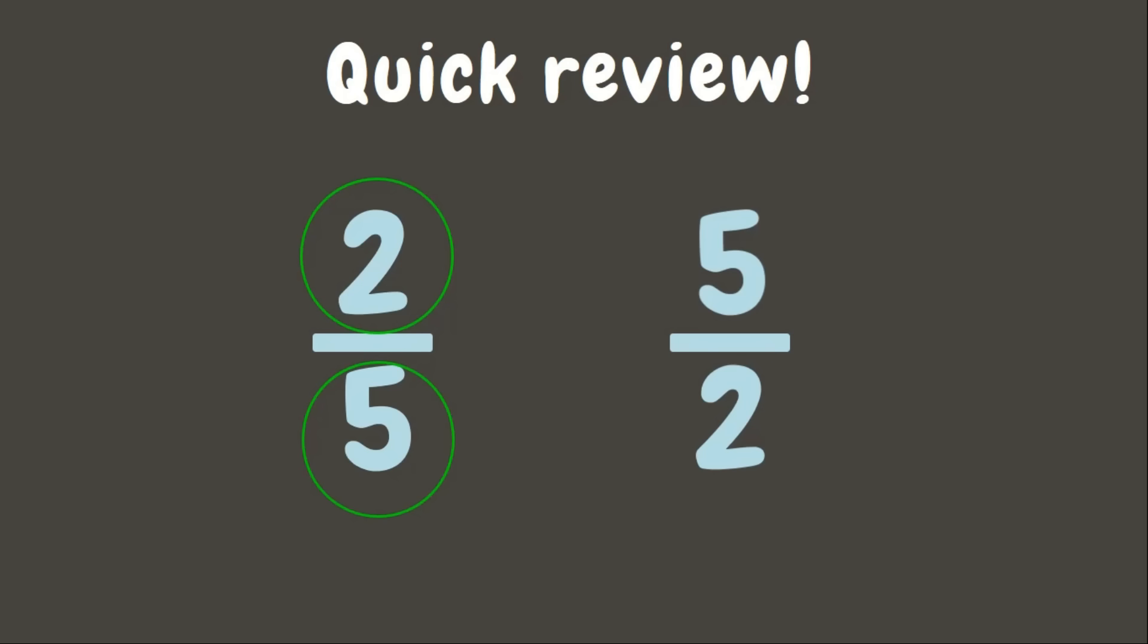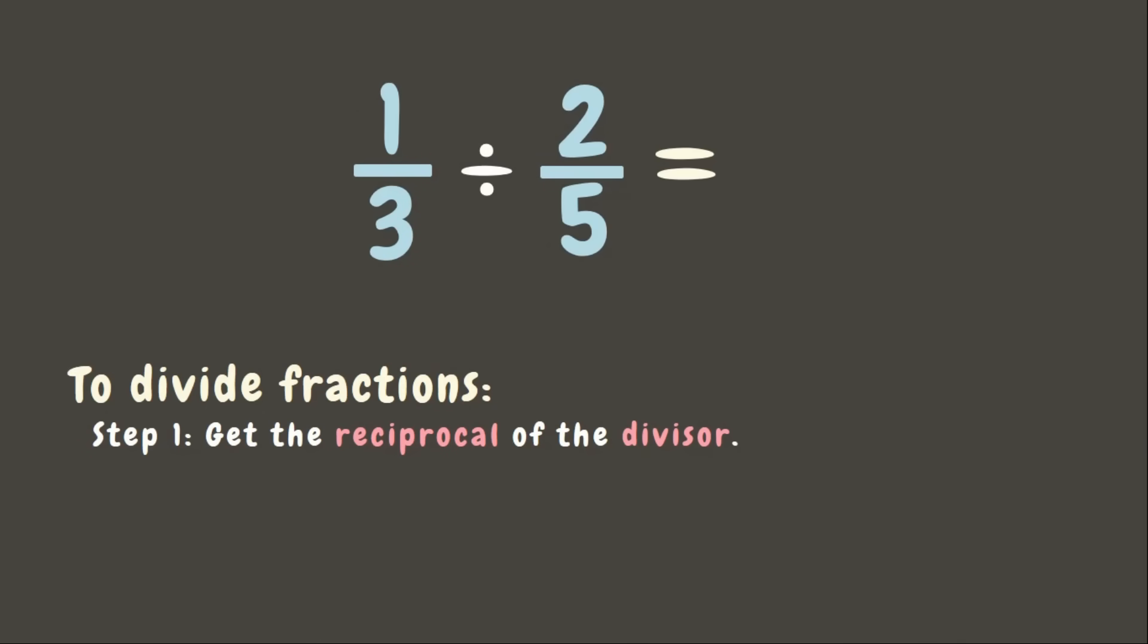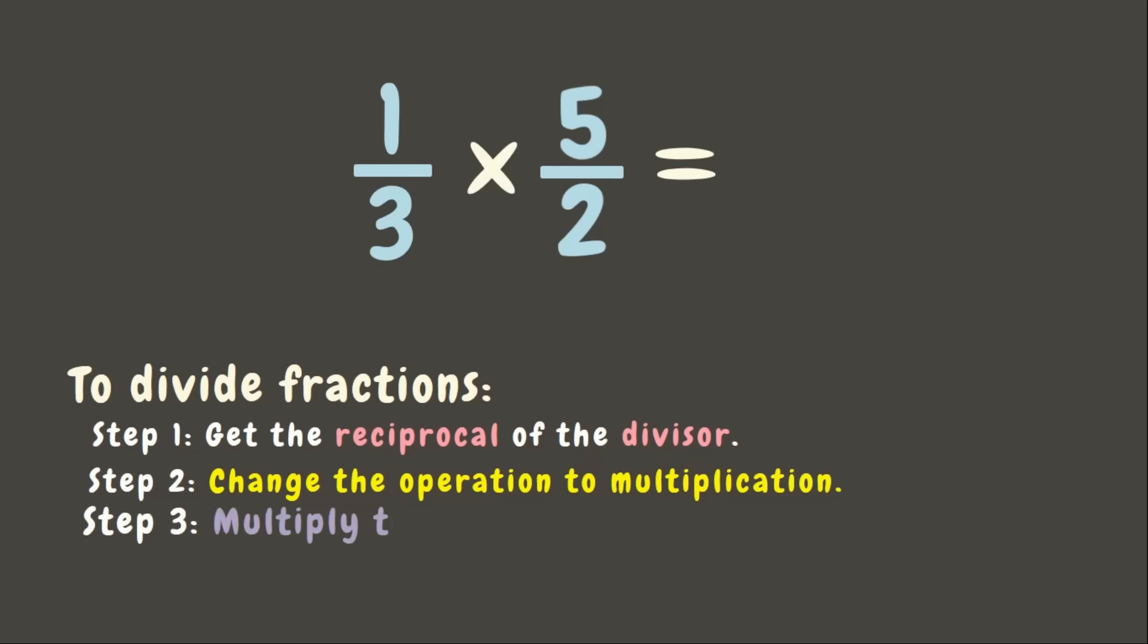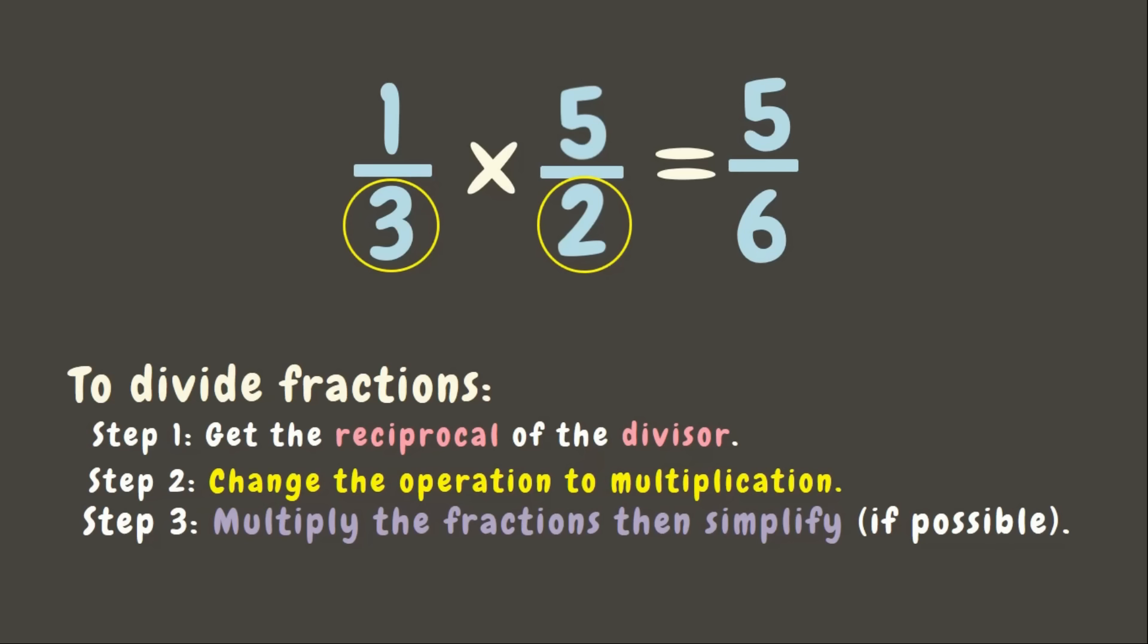There, now the reciprocal of two-fifths is five halves. Now let us go back to our problem. Now let's get the reciprocal of the divisor two-fifths. There you go. The next step is we need to change the operation to multiplication and it's time to multiply the numerators and the denominators. One times five is five, three times two is six. Since our answer is already in its simplest form, this is now our final answer.